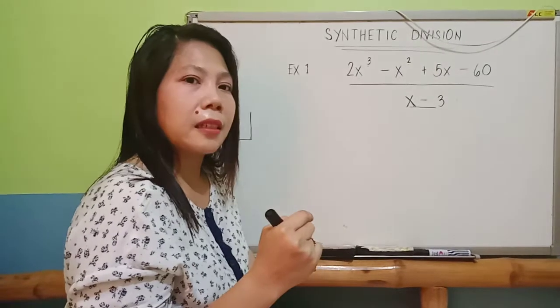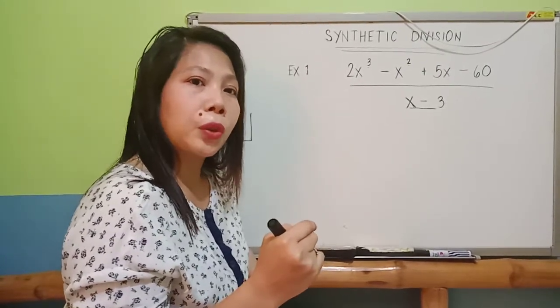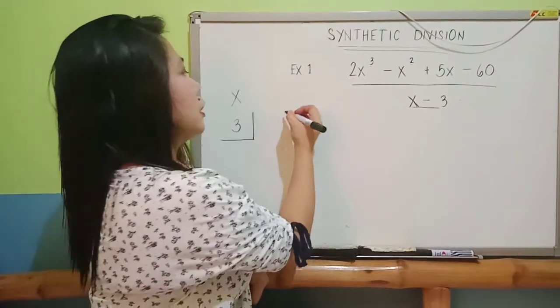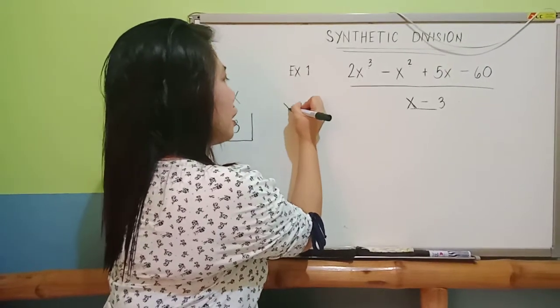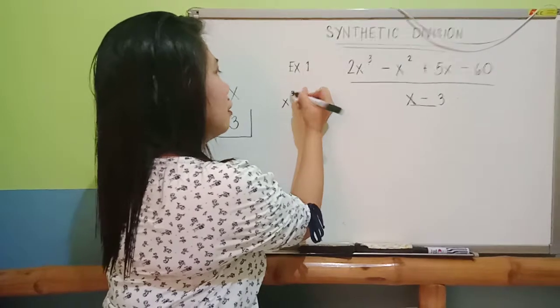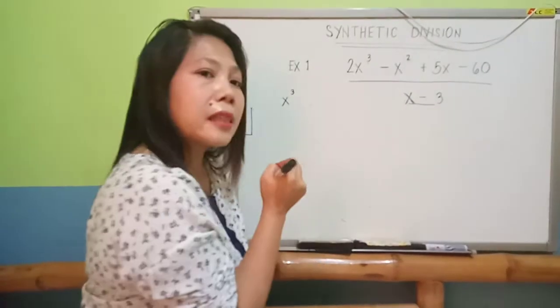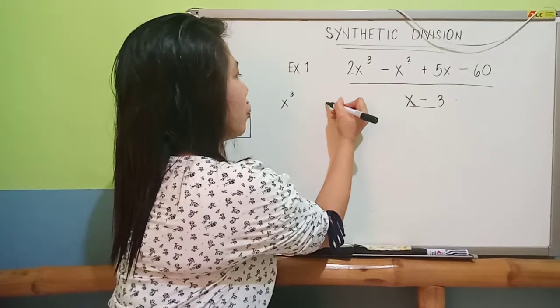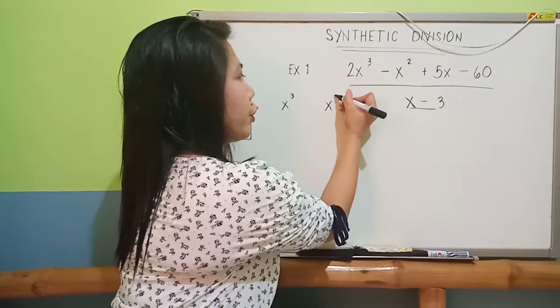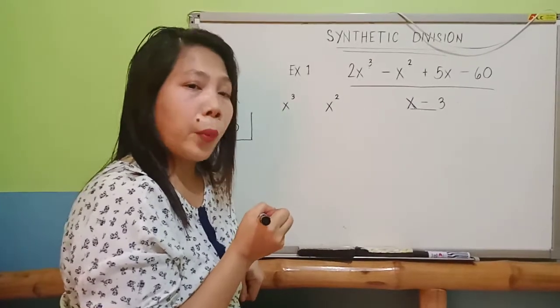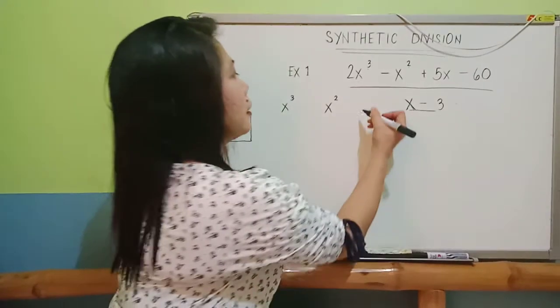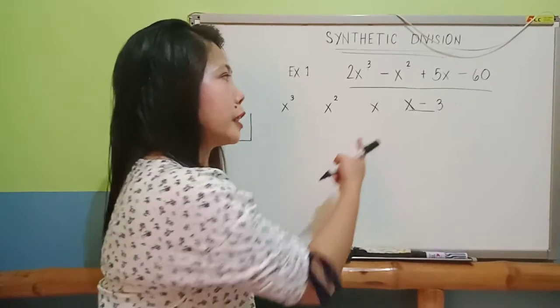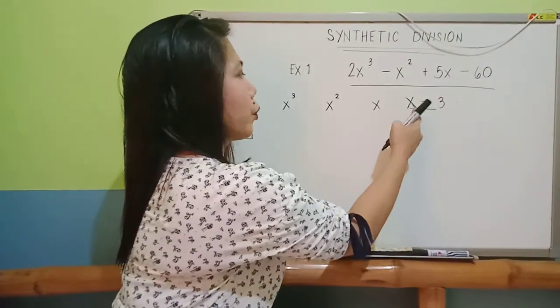So, if that is the case, therefore, you could be able to drop down your coefficients. I'll just show you the illustration. This will be the coefficient for your x cube. Since that is the highest exponent, then this will be the place for your coefficient for your x squared, and then this is the place for your x to the first power or simply equal to x. And then you have here your constant.